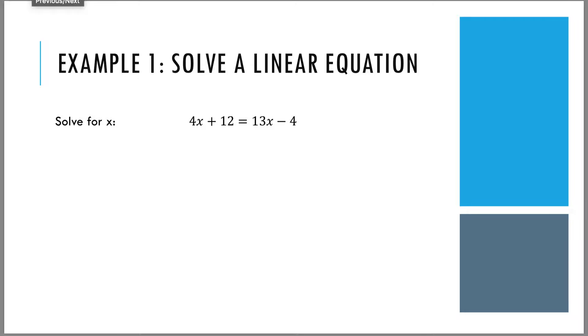First example is how to solve a linear equation. We're given an equation that has a variable called x in this case, and we have to get x by itself. The first step is to get all the terms that have x on one side, all the terms that don't have x on the other side. I'll get the terms that have x to the right side. In order to do that I need to subtract 4x from each side, that will get rid of this 4x over here.